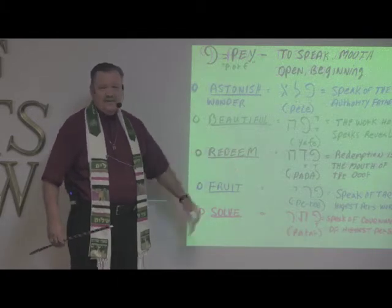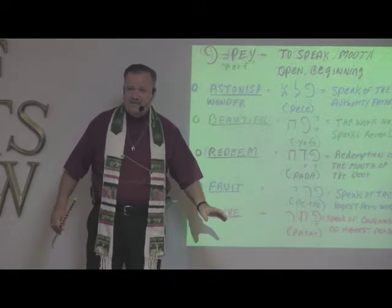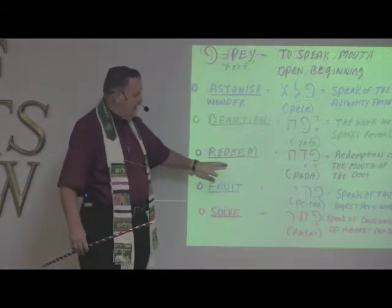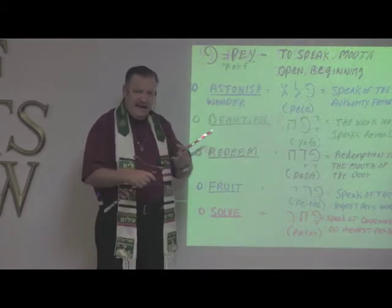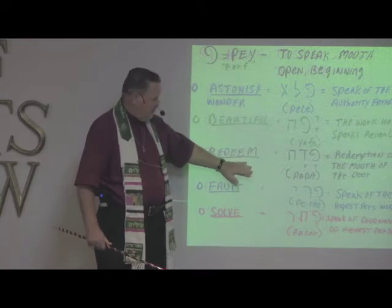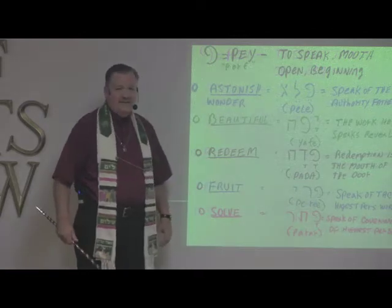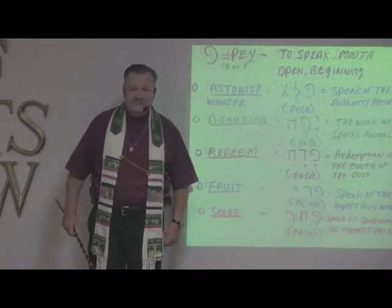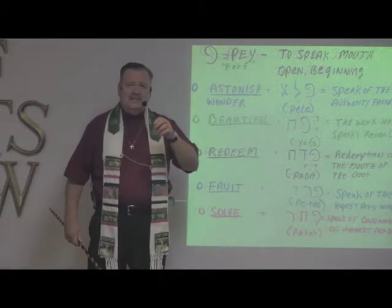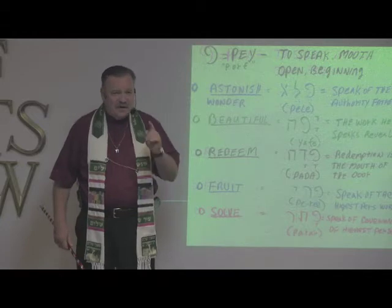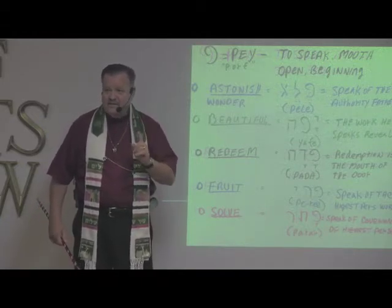Originally in this language there were no letters — it was word pictures. Paleo Hebrew. The characters were added later. When we bring the word pictures to view, it tells us something deeper about the words. When you think about being redeemed, you ought to be thinking about blood on the door. Have I applied the blood of the Lamb not only on the doorpost of my house, but on the doorpost of my heart? Because he's redeemed it.